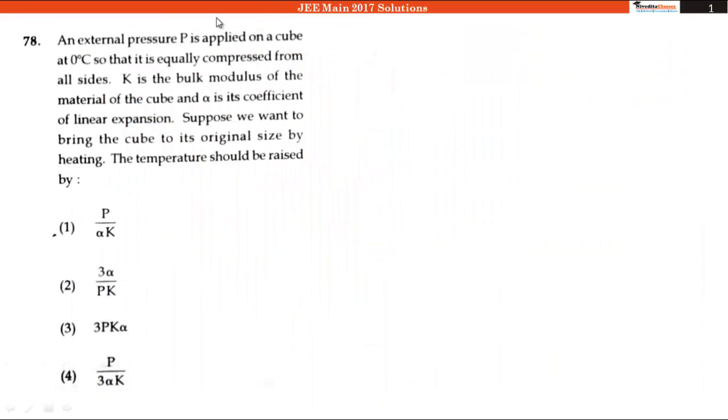An external pressure P is applied on a cube at 0°C so that it is equally compressed from all sides. K is the bulk modulus of the material of the cube and α is its coefficient of linear expansion.